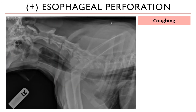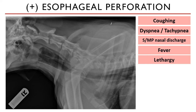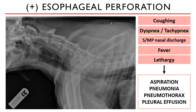If there is esophageal perforation, clinical signs become more specific to the respiratory system — including coughing, difficulty breathing, elevated respiratory rate, serious to mucopurulent discharges, fever, and lethargy. All of these can lead to secondary complications such as aspiration pneumonia, pneumothorax, and pleural effusion.